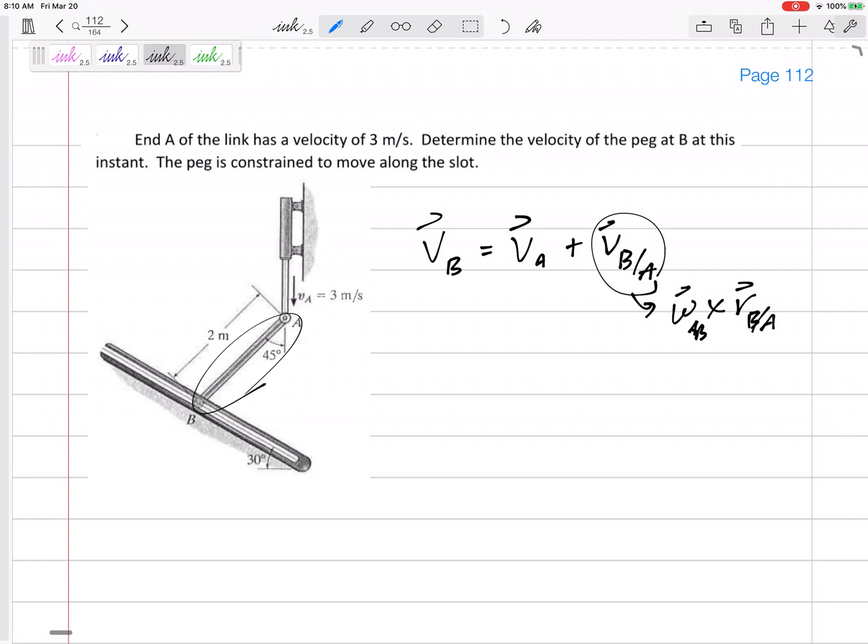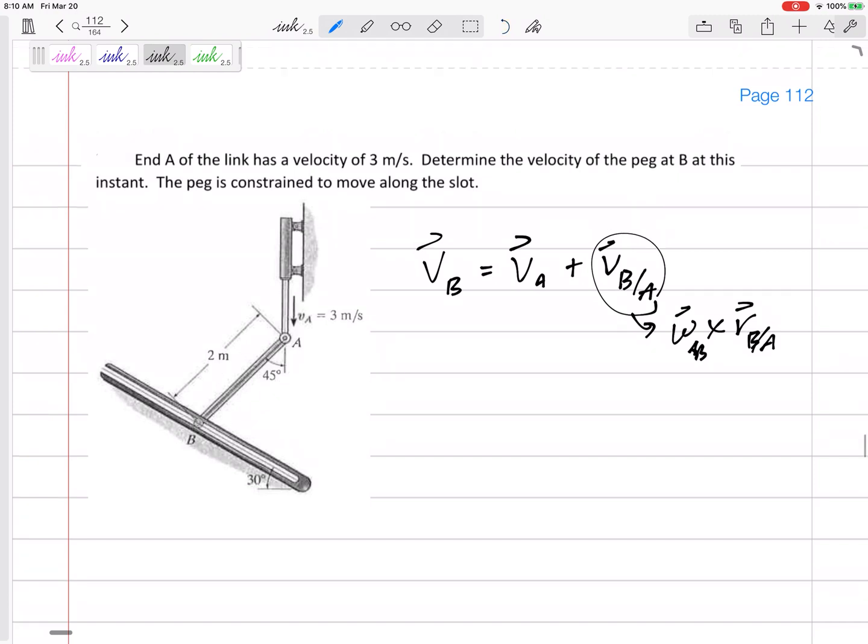I think we can go straight into this equation right here. I know the velocity of A is three down. I don't know that, and I know just from the figure I can do the r from A to B. I don't know this, but I know its direction, right?